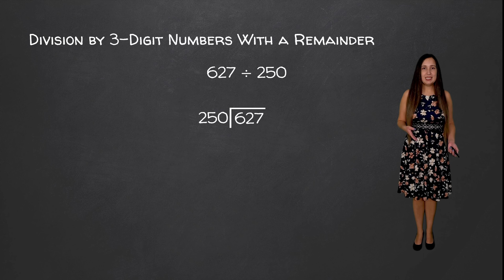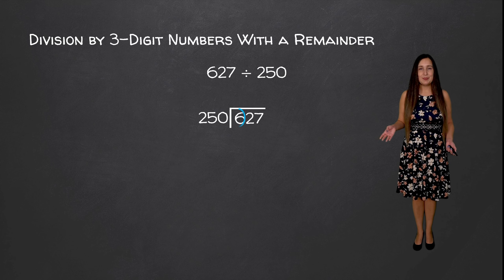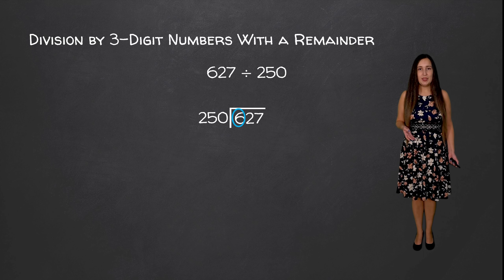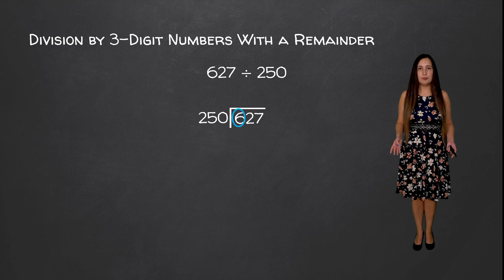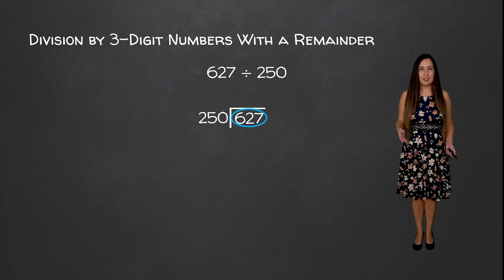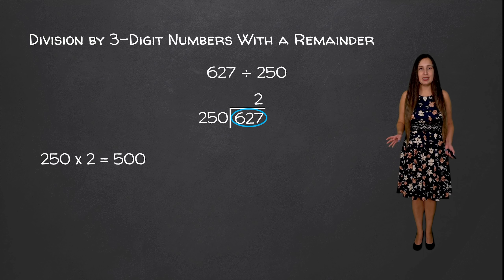Now we're going to see how many times 250 goes into 6 — it doesn't, because 250 times 0 is 0, and 250 times 1 is 250, which is too large. For that same reason, 250 does not go into 62. So now we're going to see how many times 250 goes into 627. It goes in two whole times because 250 times 2 is equal to 500, which is as close as we can get without passing 627.